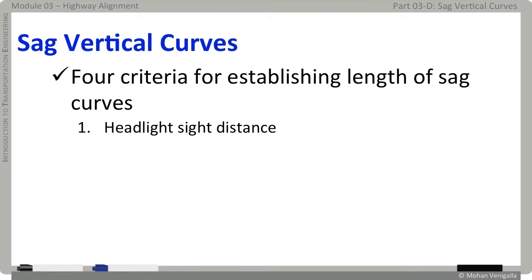If, for some economic reasons, such lengths — meaning headlight sight distance — cannot be provided, a fixed source of lighting should be provided to assist the driver. The second main consideration in designing a sag curve is passenger comfort. We don't want to make the drive along the vertical alignment like a roller coaster ride.